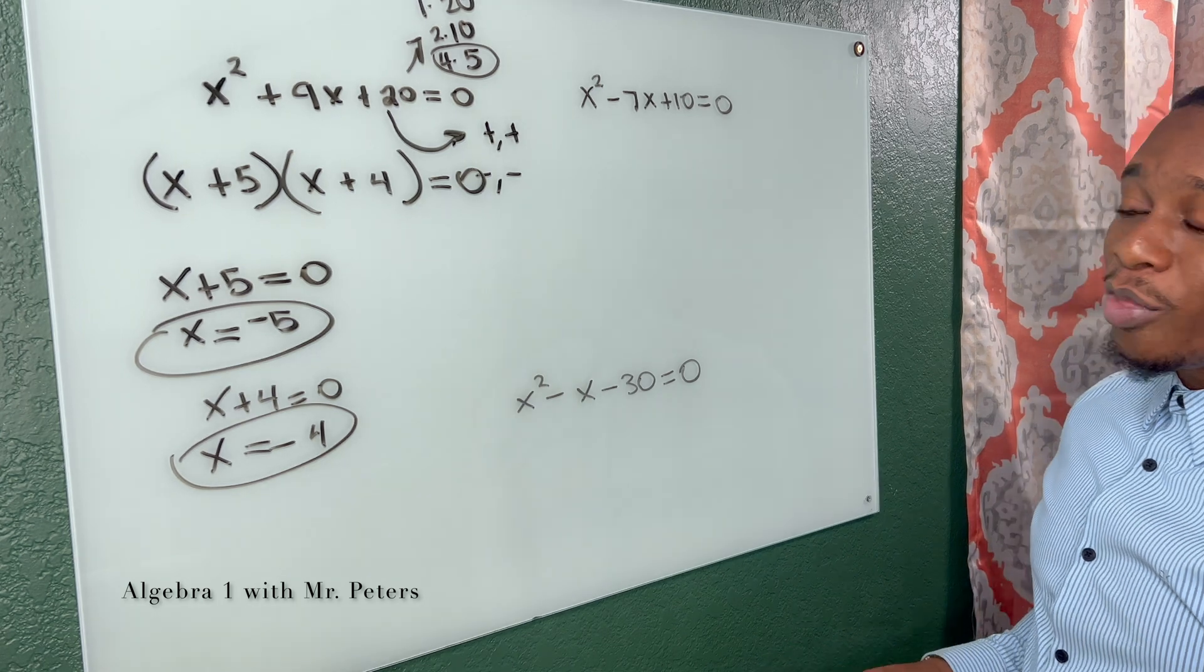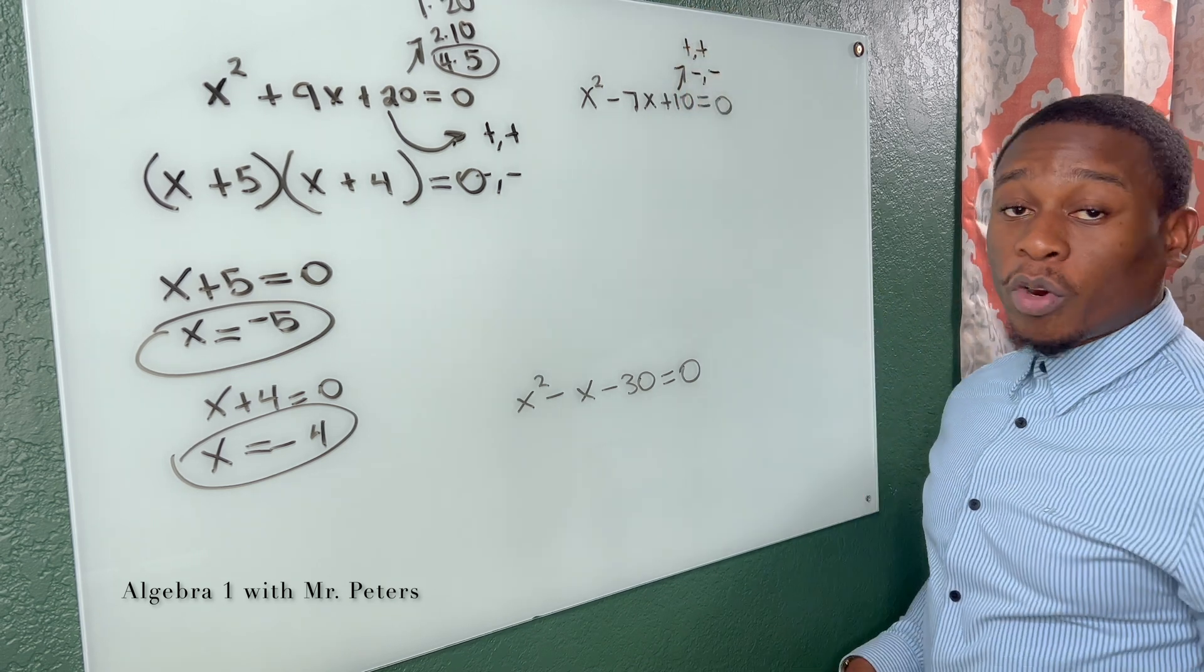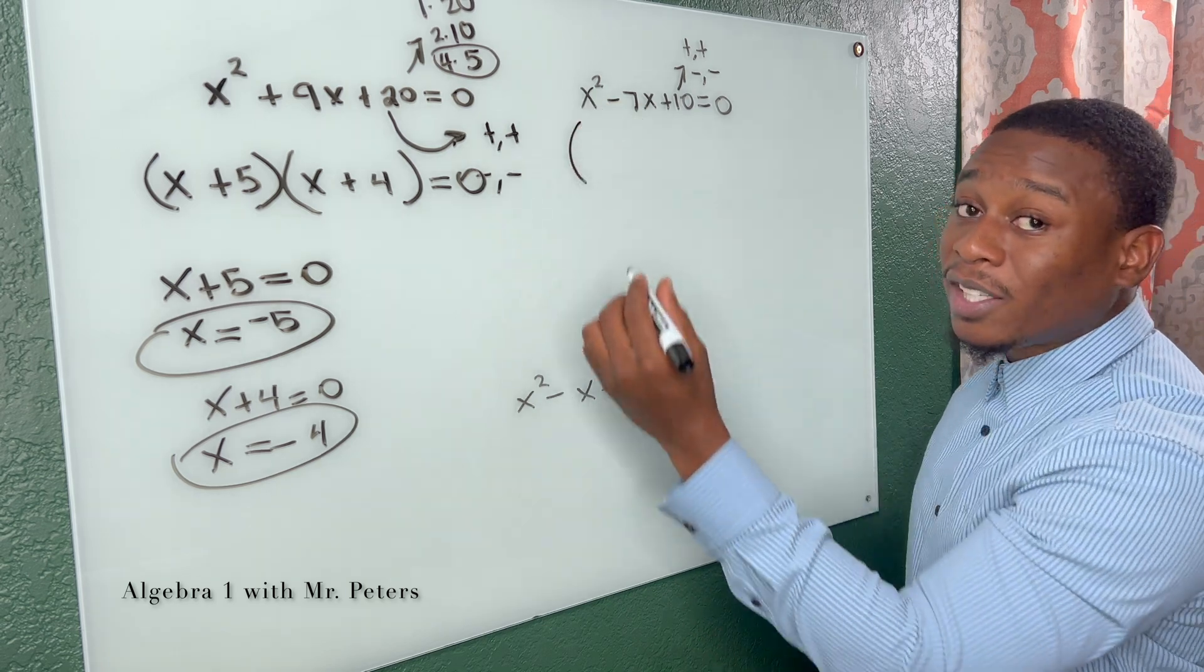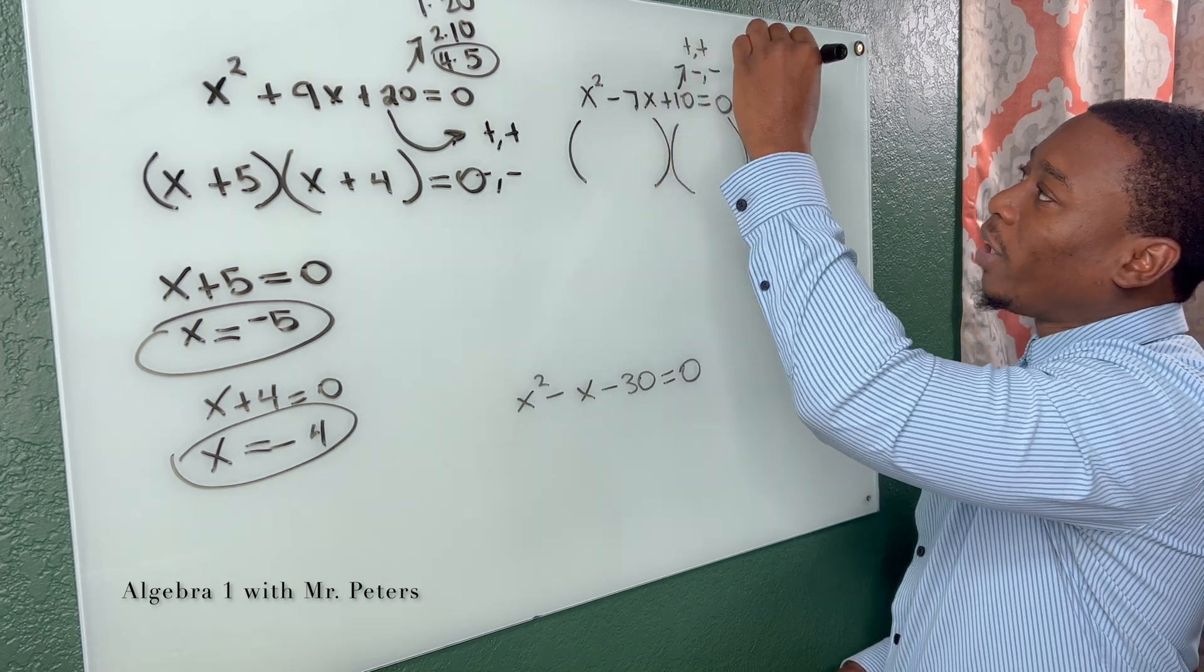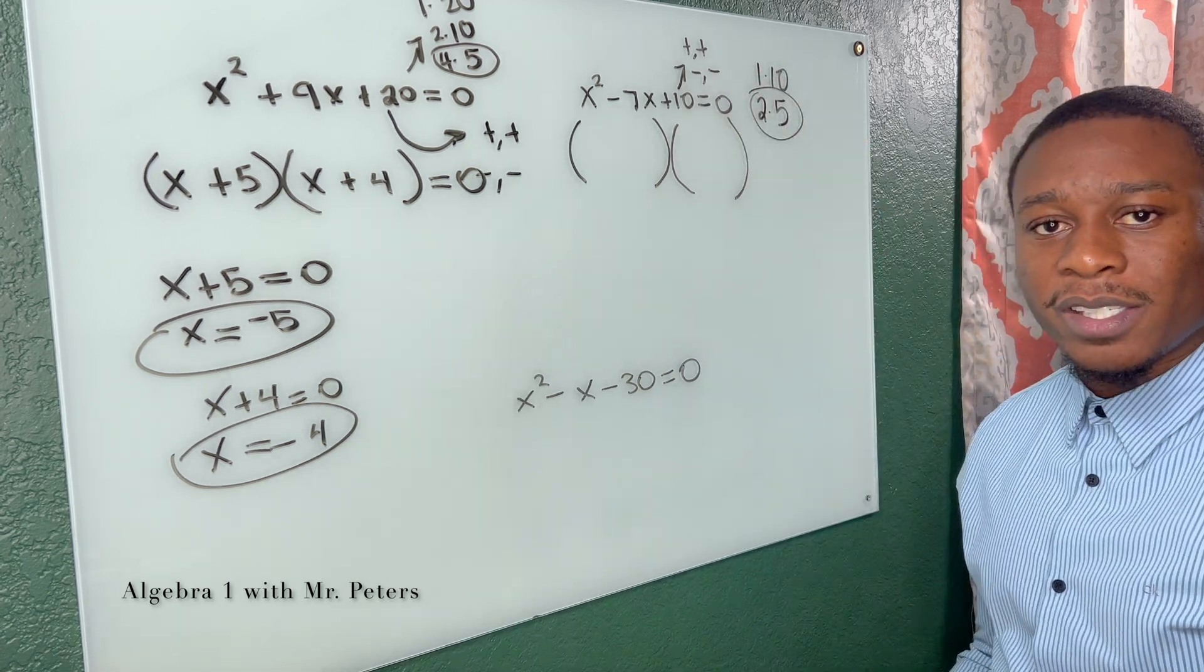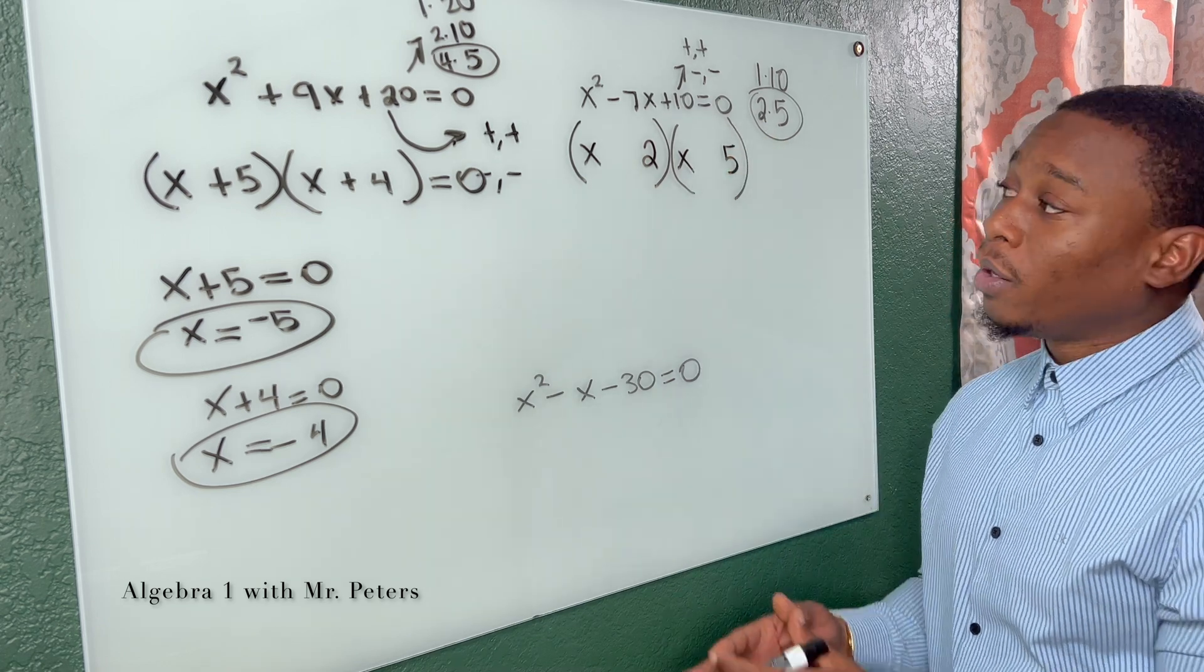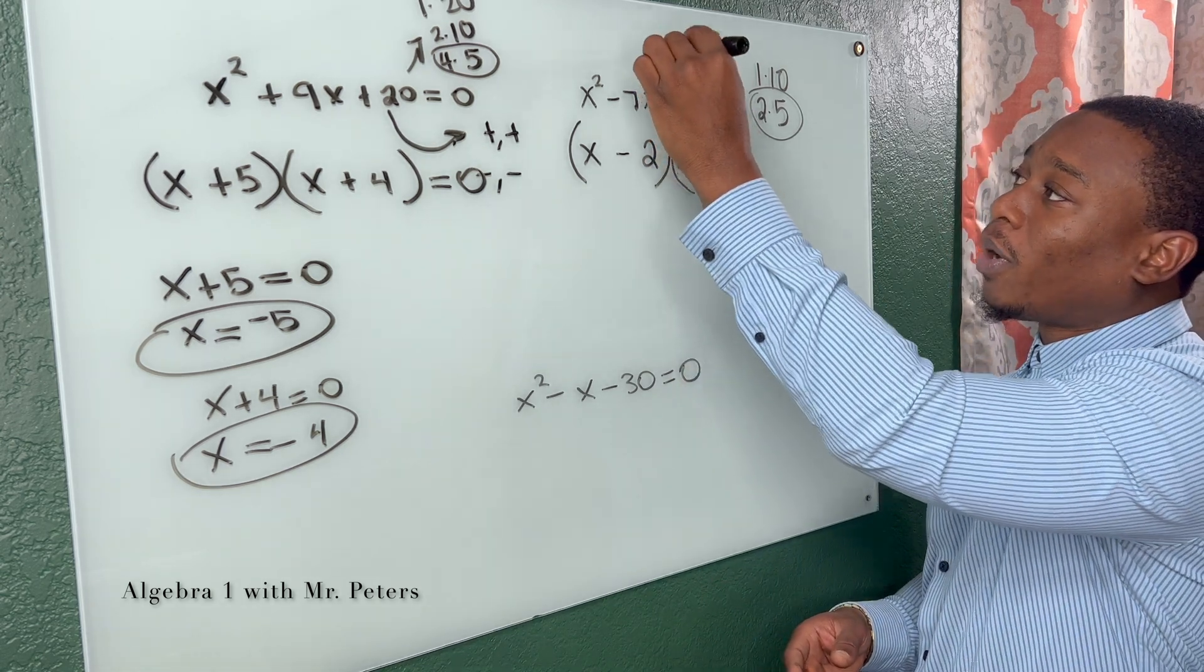Now in our second example, there's a little difference. C is positive, that means both our signs are either positive or they're both negative. But because 7x is negative, that means when we add these two factors, we're going to get a negative number. So that lets me know both of them are negative. We could break down 10 as one times 10 or two times five. We know two plus five could give us that seven. So we have x, we have two, and we have five. For us to get a negative when we add, both of these have to be negative to get negative seven. But when we multiply both of these negatives, it'll give us our positive 10.